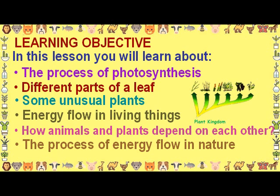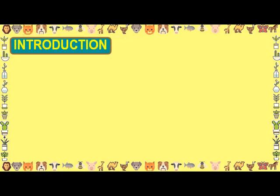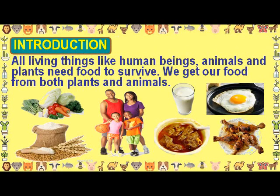You will also learn about some unusual plants, energy flow in living things, how animals and plants depend on each other, and the process of energy flow in nature. All living things — human beings, animals, and plants — need food to survive. We get our food from both plants and animals.